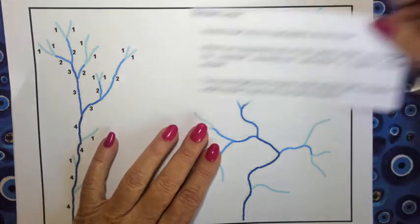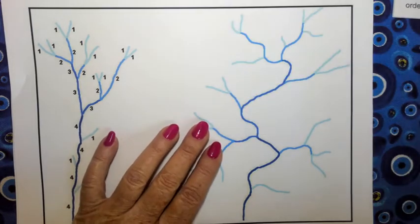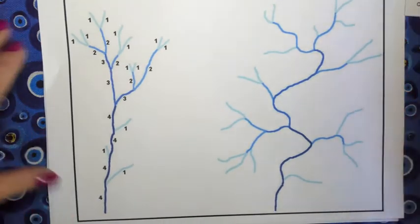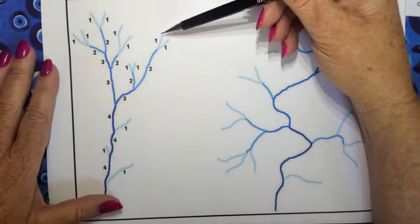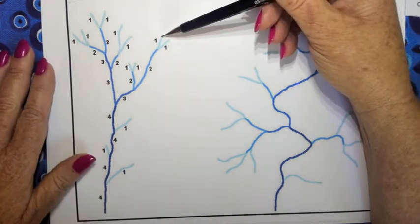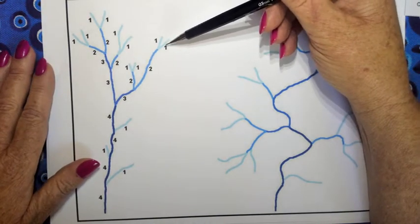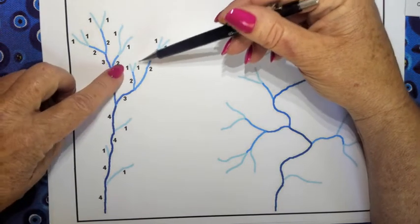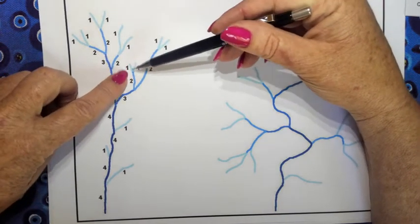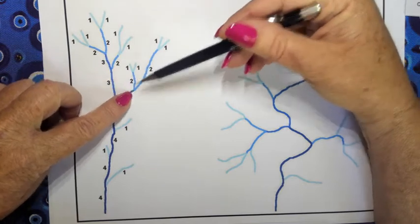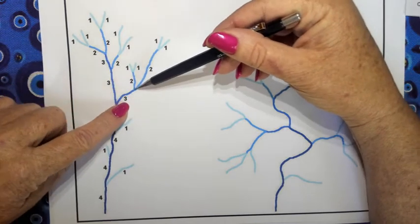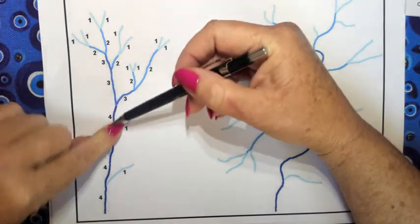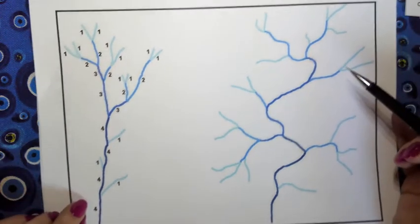Now let's quickly look at the left-hand diagram. This is quite straightforward. We start at headwaters — that's stream order 1. When two 1s converge they become a 2. When two 2s converge they become a 3, and you follow up from there.